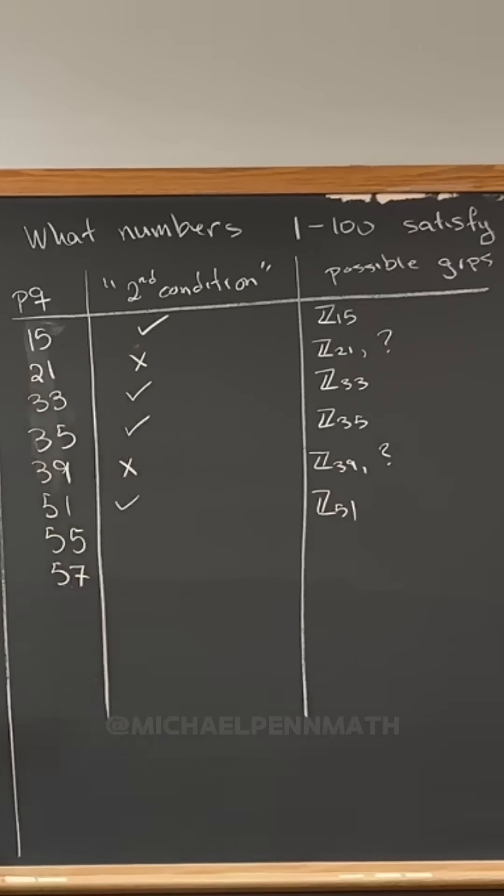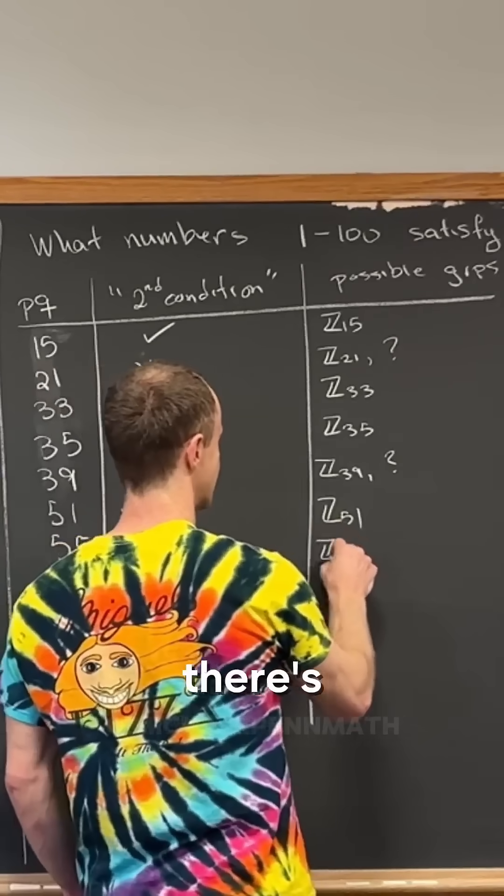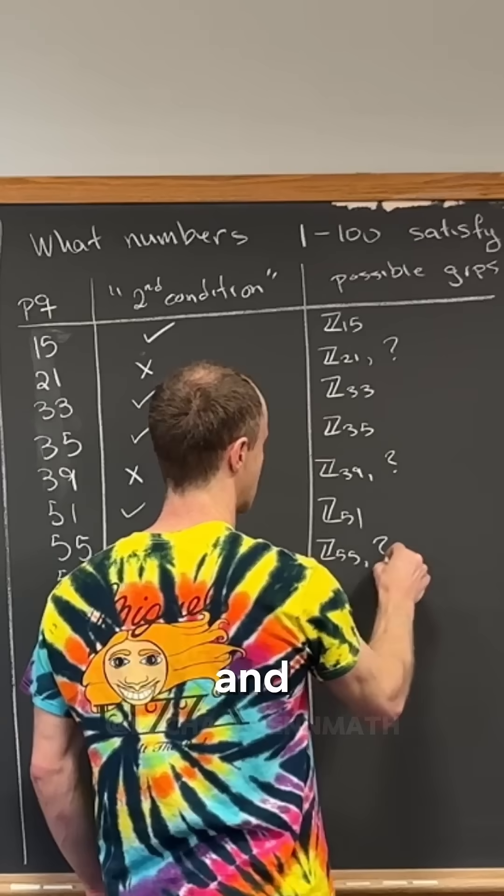Now what about 55? Is 11 congruent to one mod five? Yes, it is. So it does not satisfy. So that means there's Z55 and question mark.